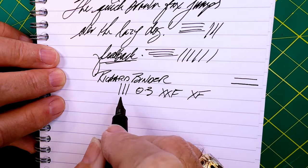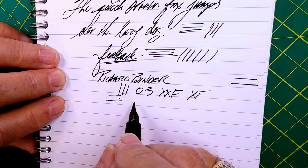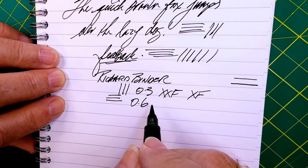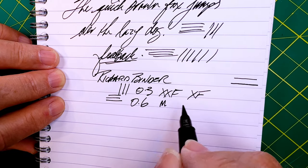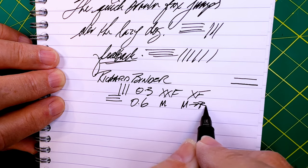And the horizontal line there is 0.6, which is a Western medium or a Japanese medium to broad.